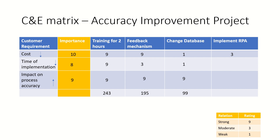Implementing the RPA solution — it is not very cost-effective, but it is better than changing the entire database, so a three is given. Time of implementation also gets a three compared to the other solutions. Impact on process accuracy will be very huge, so the score is nine. The overall score is 10×3 (30) + 8×3 (24) + 9×9 (81) = 135.